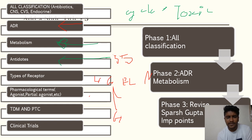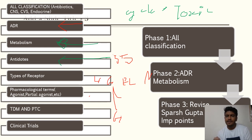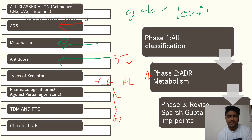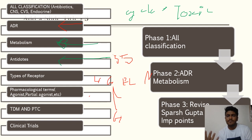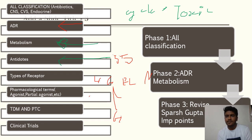Next, prioritize pharmacological terms — definitions of pharmacology, pharmacokinetics, pharmacovigilance, and pharmacotherapeutics are often avoided but are important. Know terminologies like agonist, super agonist, inverse agonist, and partial agonist, and understand intrinsic activity, efficacy, potency, and affinity. Intrinsic activity and efficacy are one and the same; potency refers to the strength of dose, while affinity refers to the likeliness toward a receptor.